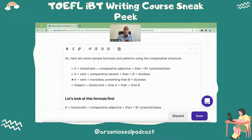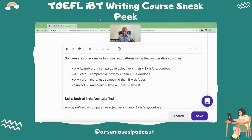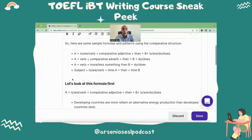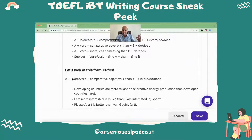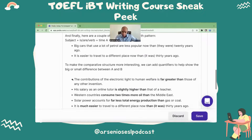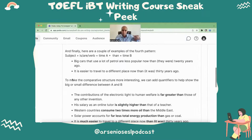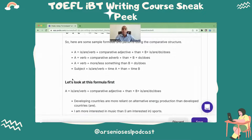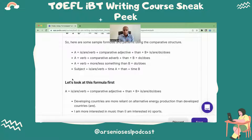So A plus is our verb plus comparative adjective, then B plus is our do/does. Now, all that doesn't make a hell of a lot of sense, and that's why I'm just showing you these formulas right now so I can make a little bit more sense of it. I have all the formulas here and we're going to be going over all of them. I'm going to scroll back up here, but let's just take a look at the formula that I just said right here, right now.